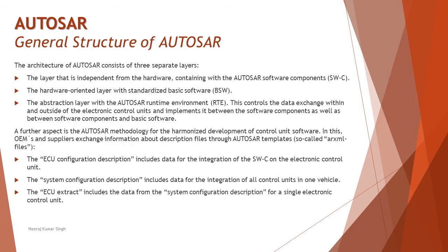The general structure of AUTOSAR describes what it comprises and how it works to meet those objectives. The AUTOSAR architecture consists of three separate layers: first, a layer independent from the hardware containing the AUTOSAR Software Component, known as SWC; second, a hardware-oriented layer for integrating software to hardware with standardized Basic Software, known as BSW; and third, an abstraction layer with the AUTOSAR Runtime Environment, known as RTE, which controls data exchange between the outside of the ECU and between software components and basic software.